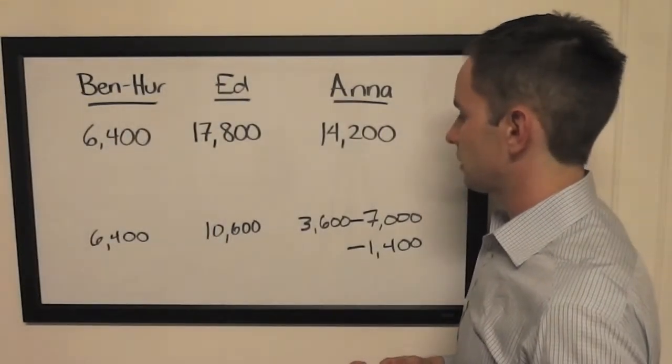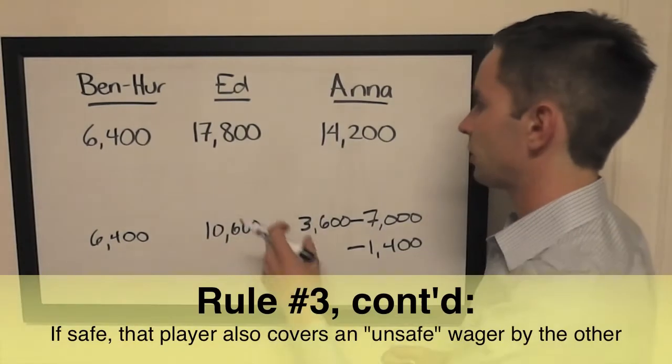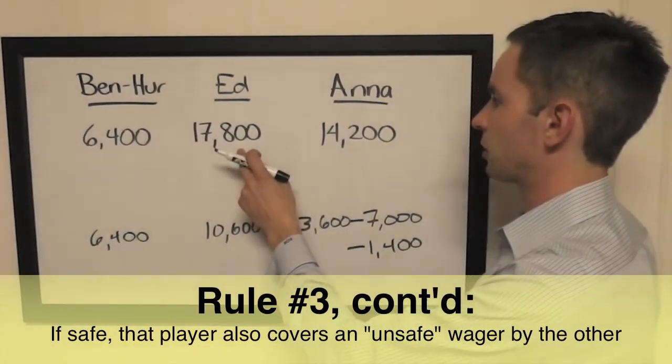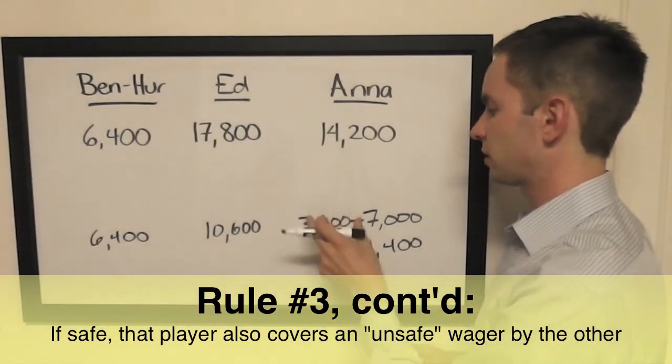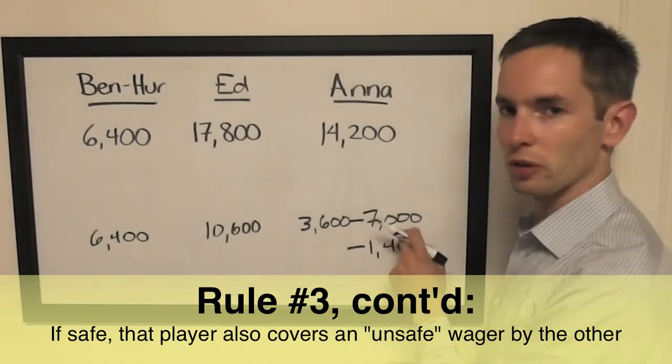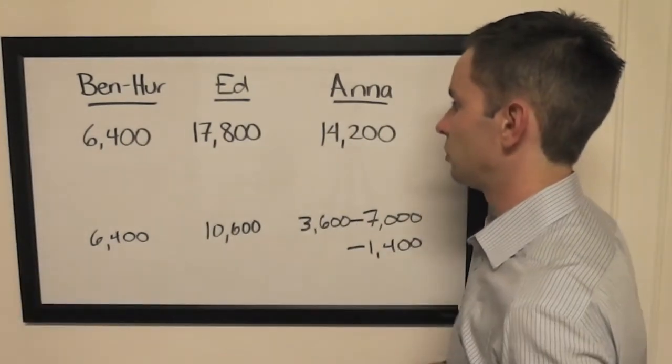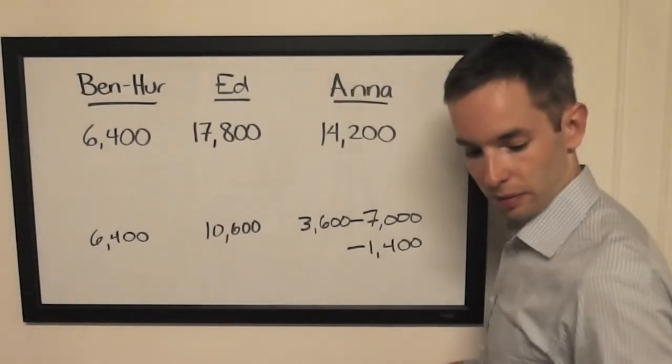Alright, is there one other? Oh yeah, the other thing would be to cover an unsafe wager by Ed. Anna would need to wager double that difference or 7,200. That's slightly more than she can wager to avoid falling below him if he does the minimum.